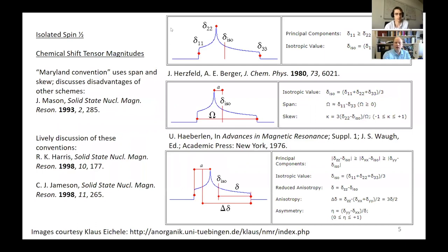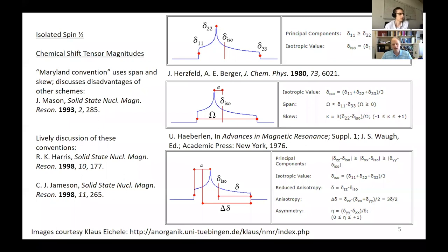Looking at chemical shift tensor magnitudes for an isolated spin one-half system — there are various conventions in the literature. The chemical shift tensor has up to nine independent elements; focusing on only the symmetric part gives six independent elements, and we can get down to three principal components by diagonalizing the tensor. Typically when we analyze these spectra — simple powder patterns — there are three elements that define them. You can use a δ₁₁, δ₂₂, δ₃₃ convention, picking off the singularities in the powder pattern.